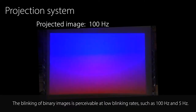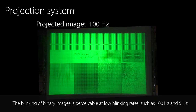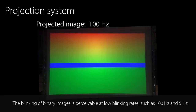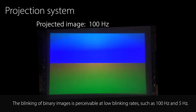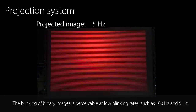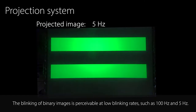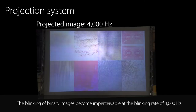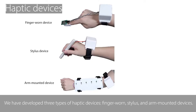Projected binary images are perceived as a natural image at a blinking rate of 4000 Hz. The blinking is perceivable at low blinking rates such as 100 Hz and 5 Hz, but becomes imperceptible at 4000 Hz.